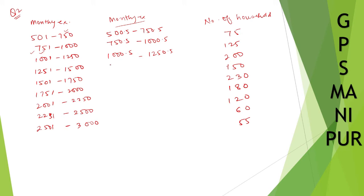This one you reduce by 0.5, that will be 1250.5, and this one you increase by 0.5, that will be 1500.5. This one you increase by 0.5, that is 1750.5. You reduce by 0.5 and increase by 0.5 for all remaining classes. So that's all.